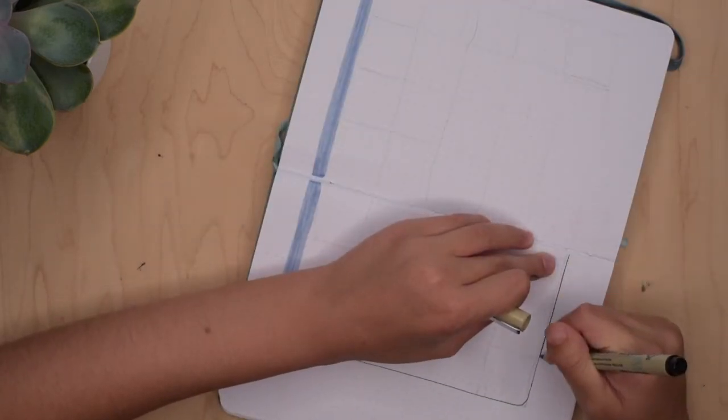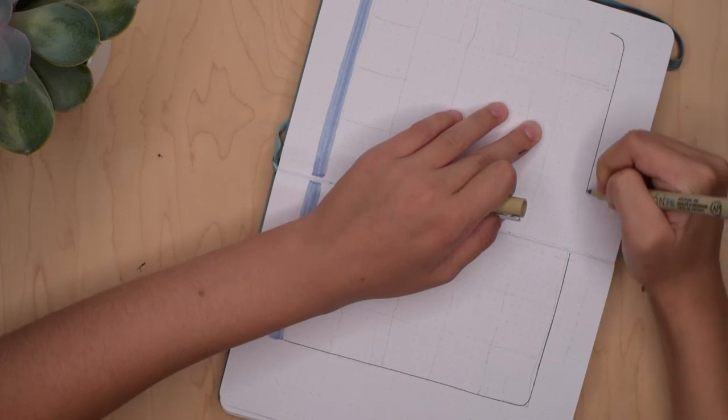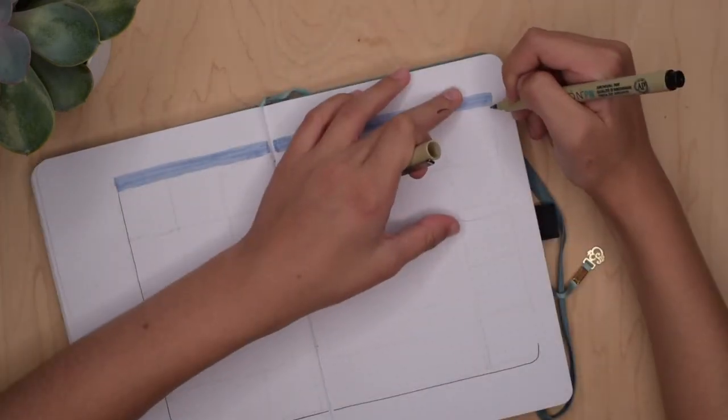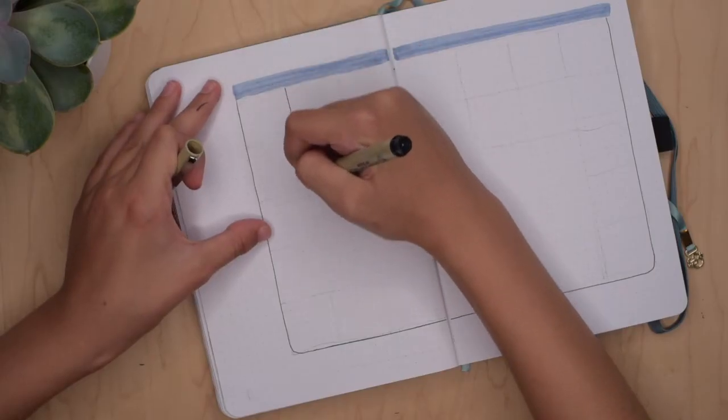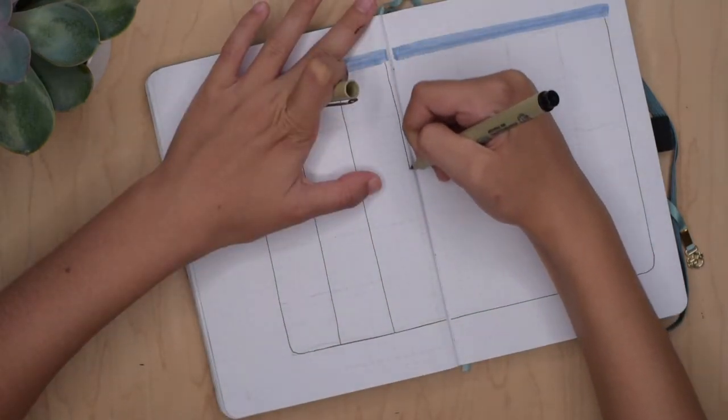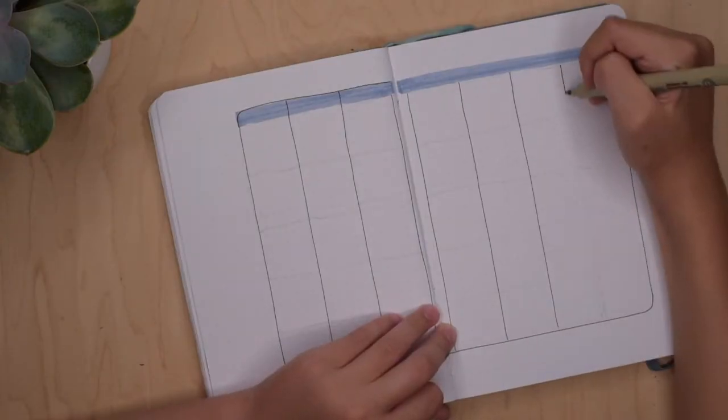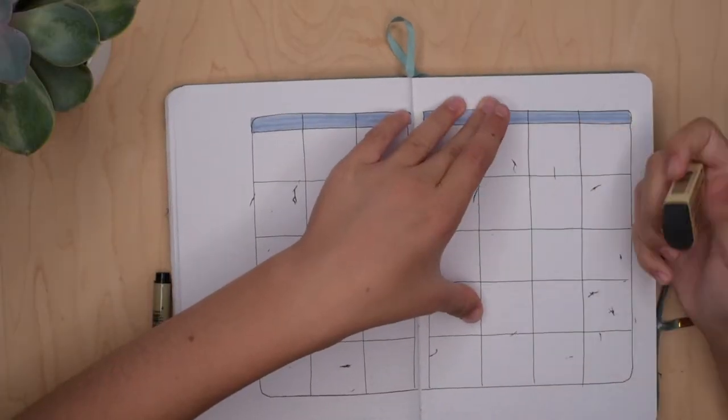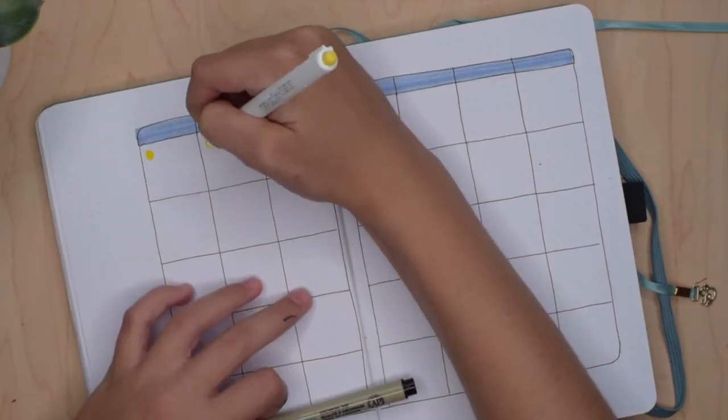I basically just did a box for the month. I definitely will be using this box more often because, as you guys know last month, I only did a half page. But since school is starting this year for me halfway through September, I thought it'd be more useful because I barely used my full page for July.